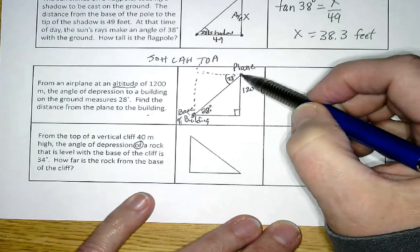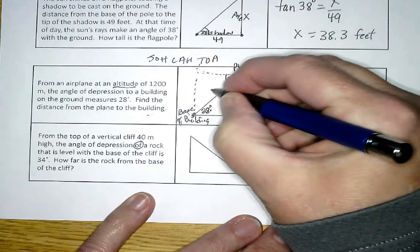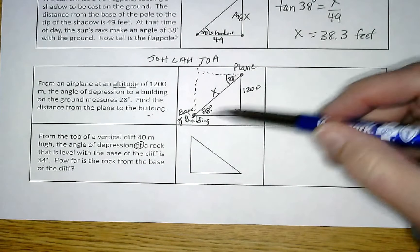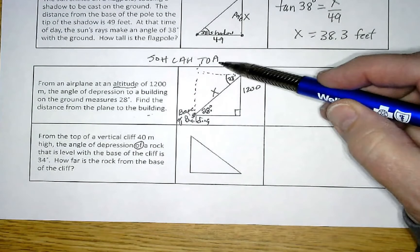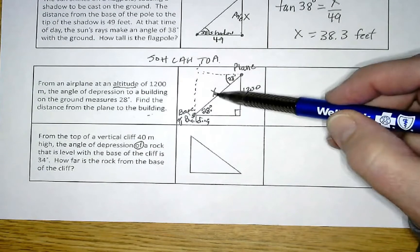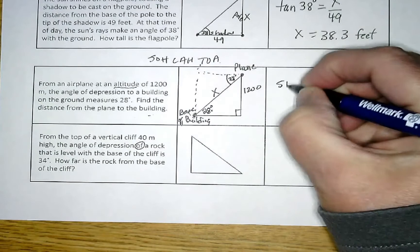So here's the plane, here's the building, so we want to find this unknown right there. Looking at this triangle and the pieces that we have, we have to figure out which one is going to be. Here's my angle, I have the opposite and I have the hypotenuse, that's going to give me sine.